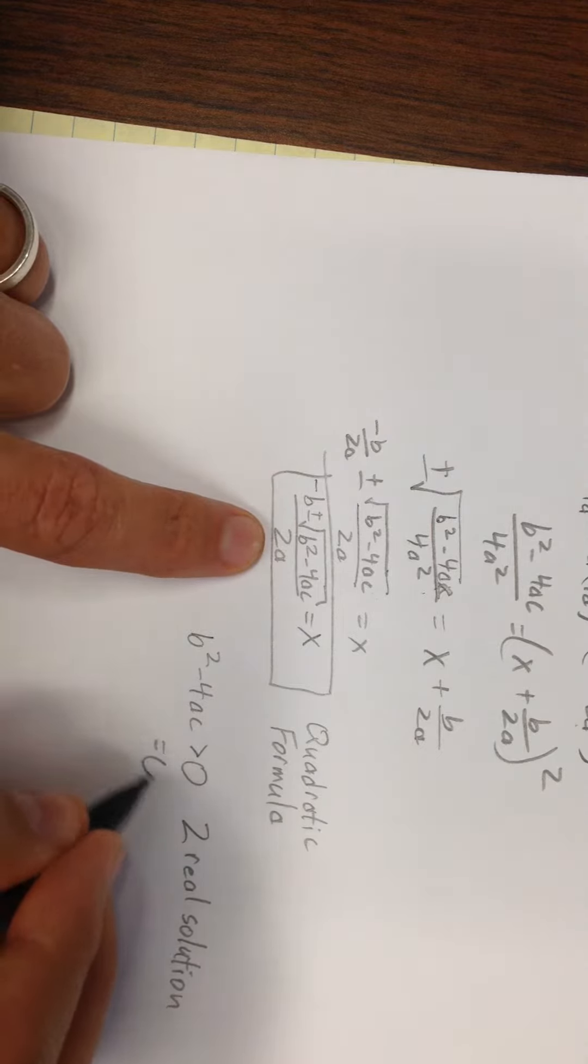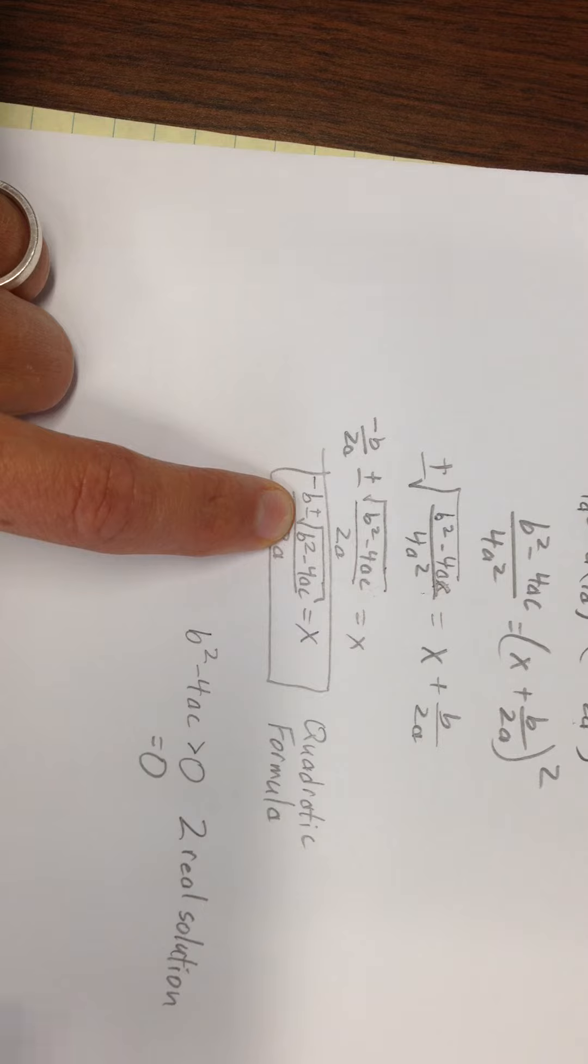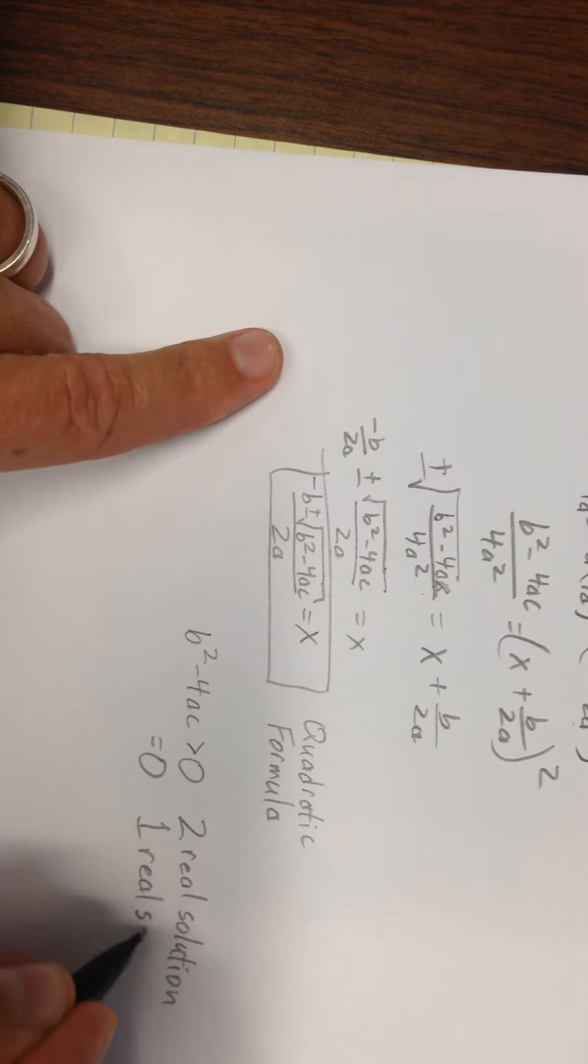Now if this thing is equal to 0, then I get -b + 0 and -b - 0. Those are both solutions, they just happen to be the same real solution, so one real solution.